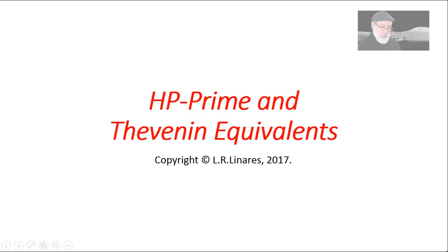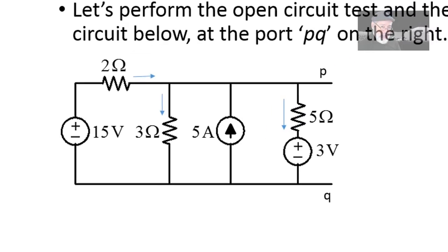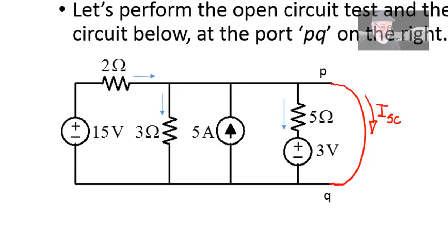Today our conversation is about the HP Prime and Thevenin equivalent circuits. We begin with a very simple circuit, and we want to perform an open circuit test and a short circuit test at port PQ on the right. Normally we show the circuit twice — once to find Voc and then a second time shorting the port PQ to compute the short circuit current. I'm going to do that differently, taking advantage of the power of the HP Prime, showing the circuit only once.